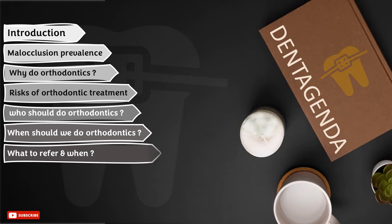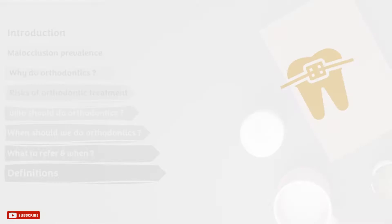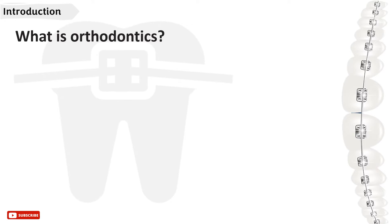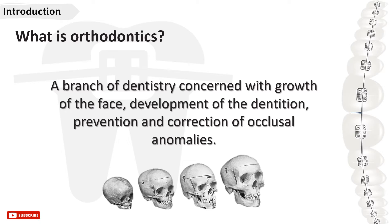These are the points we are going to discuss in this tutorial. Starting with getting to know what orthodontics is. It is the branch of dentistry concerned with the growth of the face, development of dentition, prevention and correction of occlusal anomalies. Ortho is a Greek word and it means straight. Also keep in mind that malocclusion is not a disease; it is just a variation from ideal occlusion.